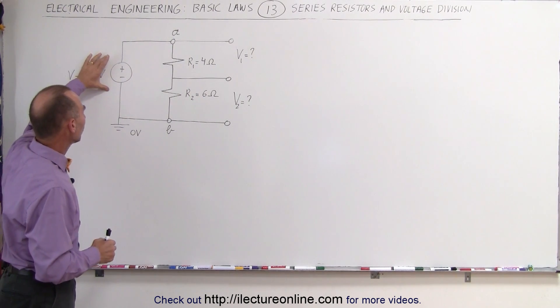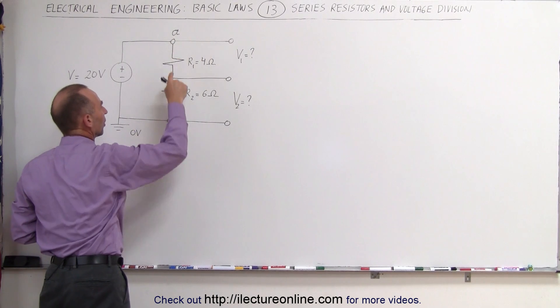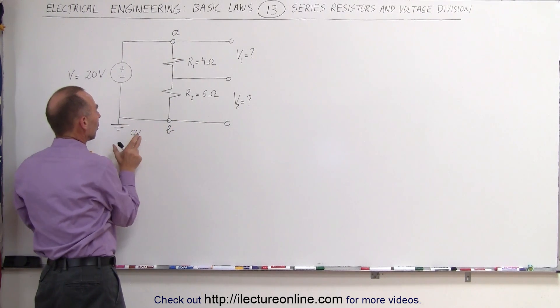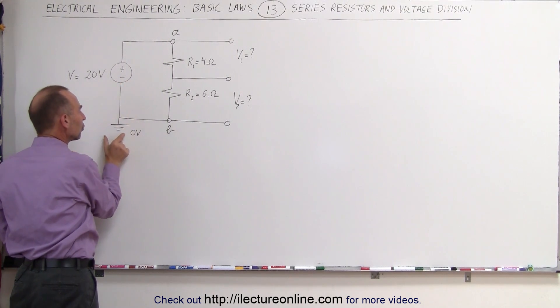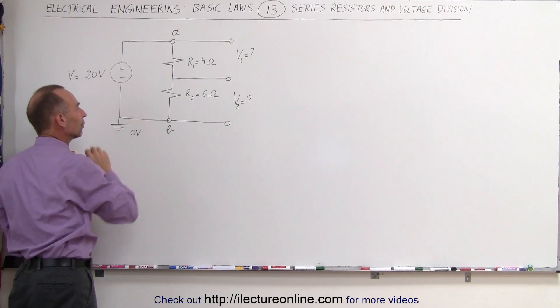Here we have a 20 volt source. Here are the output terminals of the source. Also notice that we've connected the negative end of the voltage source to ground, which means we force that to be zero volts.